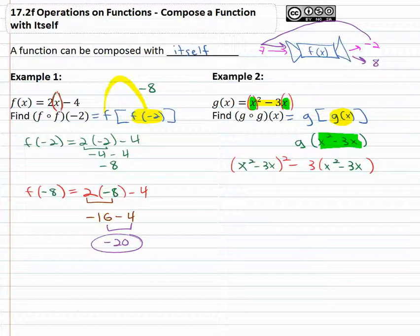Now we just have to simplify. Remember when we square, we can square the first term, gives us x to the fourth. Then we multiply them, negative three x cubed is there twice, gives us a total of negative six x cubed. And then square the last term plus nine x squared. Distribute the negative three through, gives us negative three x squared plus nine x.